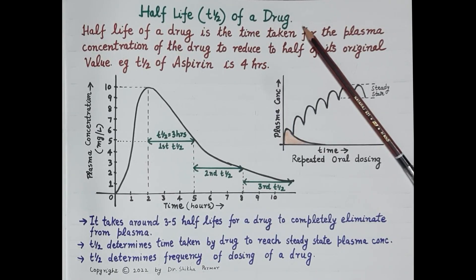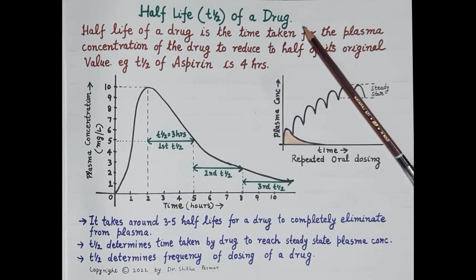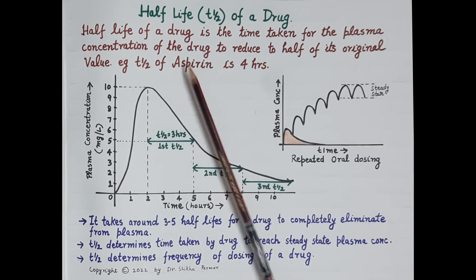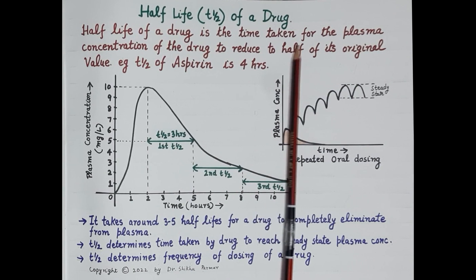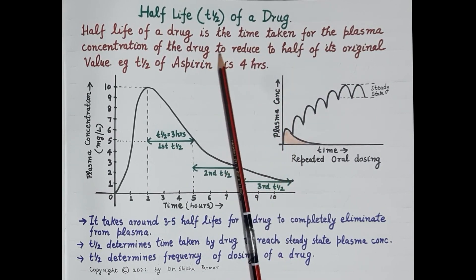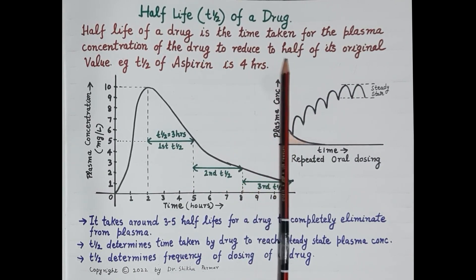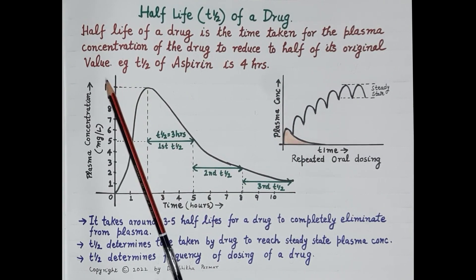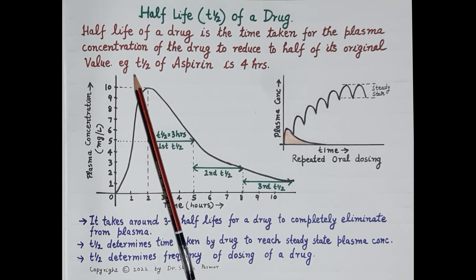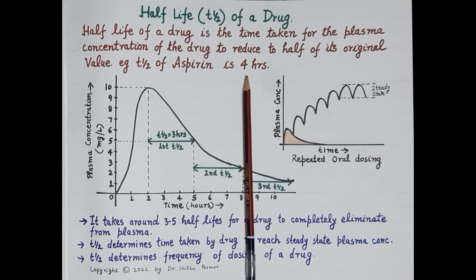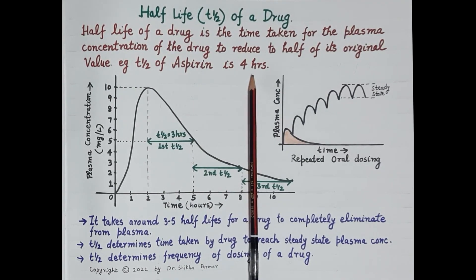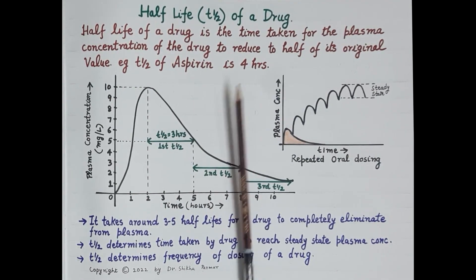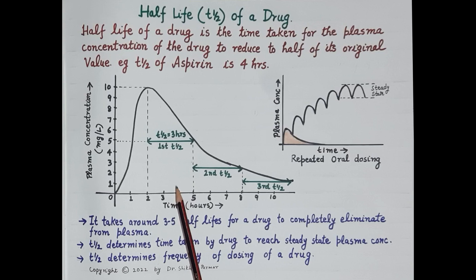Hello students. In this video we are going to study a very important parameter of pharmacokinetics — that is the half-life of a drug. This video is the 13th in the series of videos on pharmacokinetics. Half-life of a drug is the time taken for the plasma concentration of the drug to reduce to half of its original value. For example, the half-life of aspirin is four hours.